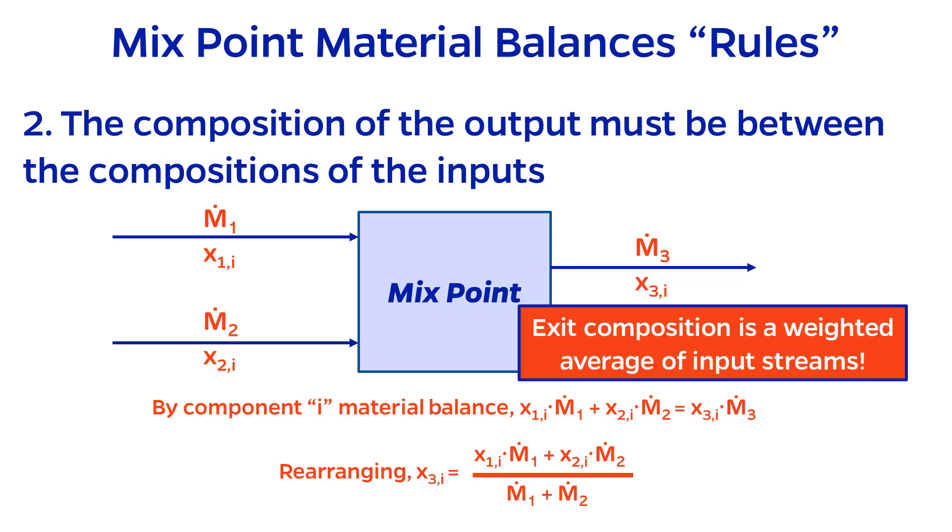Looking at this formula, we can actually go a step further and say that the exit composition is actually a weighted average of the input compositions, where the weighting factors are the proportions of the flow rates.